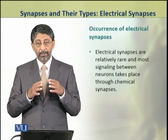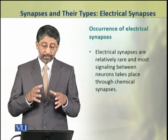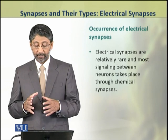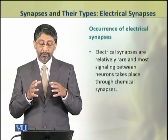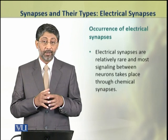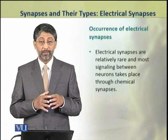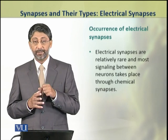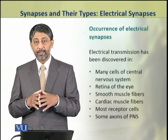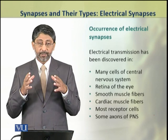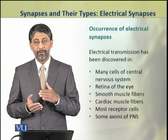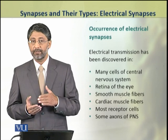Dear students, electrical synapses are relatively rare, and most signaling between neurons takes place through chemical synapses. However, electrical transmission has been discovered in many cells of the central nervous system.